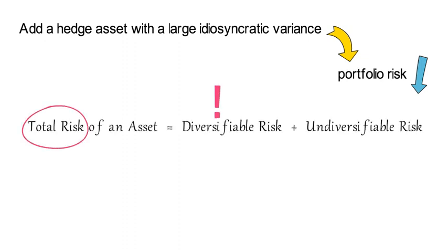There are usually three ways to express that important risk decomposition of single assets and I am reproducing them here. One way is to say that total risk of an asset is the sum of diversifiable risk and undiversifiable risk.